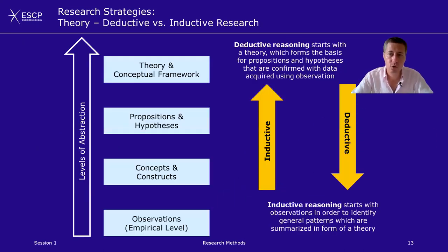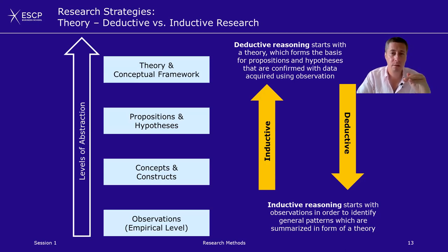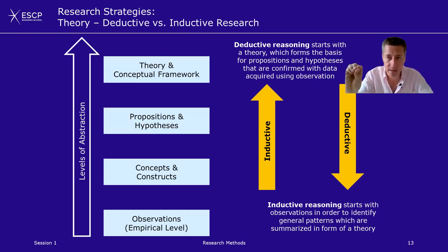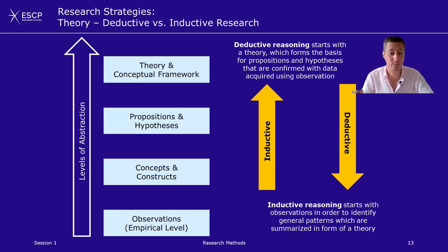An interesting question is how do you come up with a theory? There are two different ways, called deductive and inductive research. In inductive research, you develop theory from data: you start with observations, group them into concepts, understand the relationships between these concepts through propositions, and come up with a theory — inductive reasoning starts with observations to identify a general pattern. Deductive reasoning is exactly the opposite: it starts with a theory, forms propositions and expectations, and then tries to test those expectations using data.